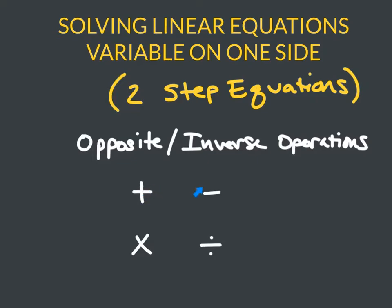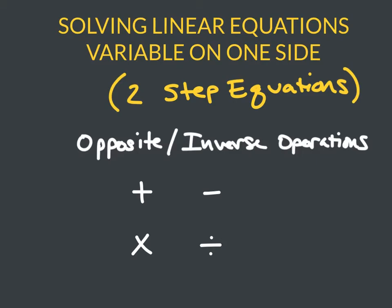We can use these hand-in-hand: the opposite of addition is subtraction, and the opposite of subtraction is addition, and vice versa for multiplication and division. Let's look at a couple of examples. In the first example, I've got three times x plus two, and that equals 14. So three times some number plus two equals 14, and we're trying to figure out what that number is.